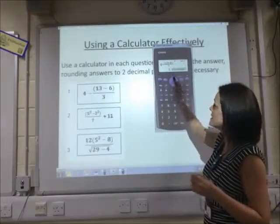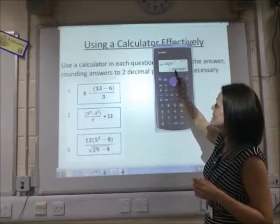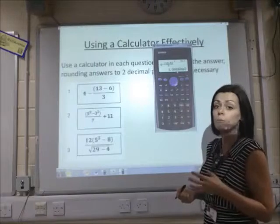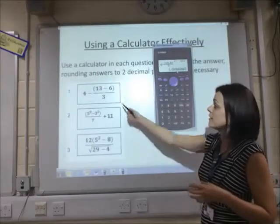It asks for two decimal places. That's going to be 1.6, and the next digit's going to need to be 7. It's going to round up, isn't it? So, 1.67 for our answer to number 1.